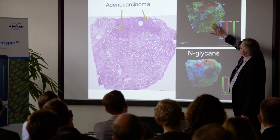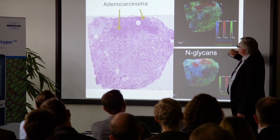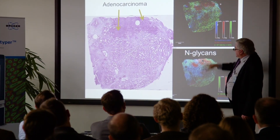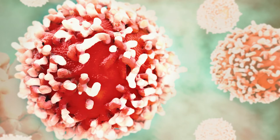Before this method, there was no way to do this in a two-dimensional way. You would have to take the tissue, grind it up, extract the glycans, and look at it that way — but you would lose all the spatial information about where they came from within the tissue. Cancers are very heterogeneous tissues; there's a lot going on in the tumor microenvironment, and with this method we can look at all of it.